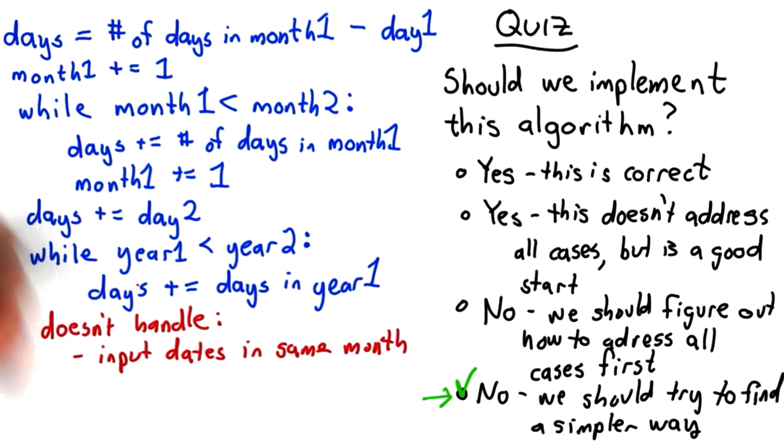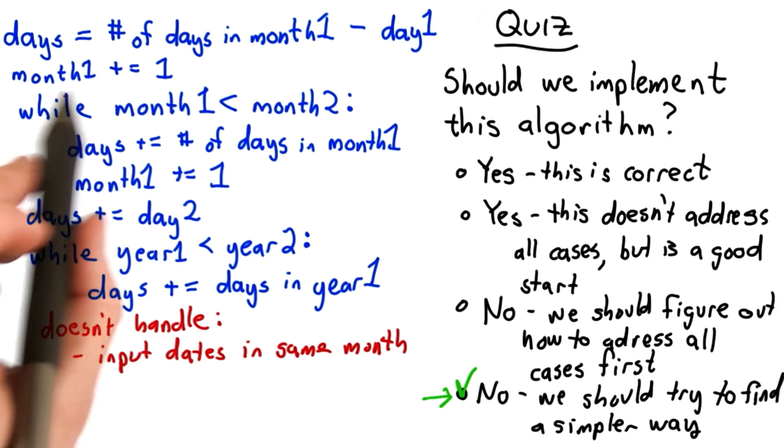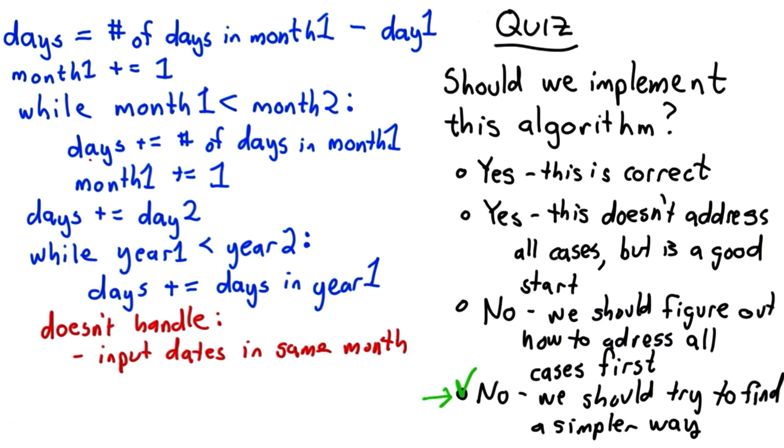We could handle this. Maybe we subtract the difference between the days. We have a special case for that. Maybe we need to do something different with this loop to account for when the months are the same. But that's painful. We're going to need a new special case. Adding one special case is okay.